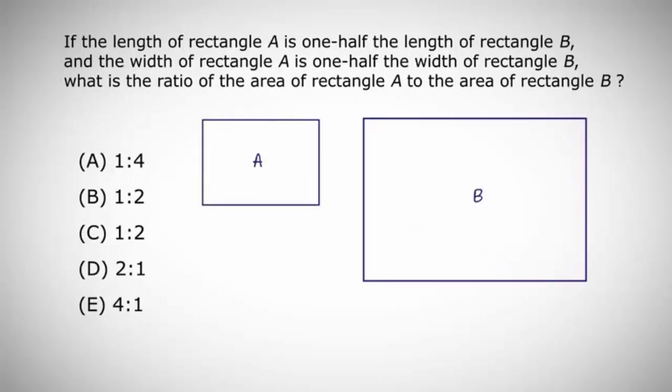Now, let's label the sides. Since we know that the length of rectangle A is one half of the length of rectangle B, let's call the length of rectangle A, L, which would make the length of rectangle B, 2L.